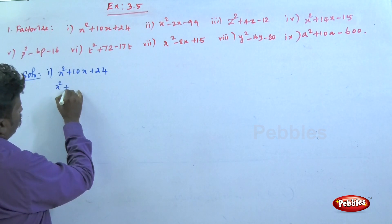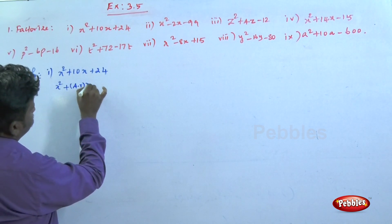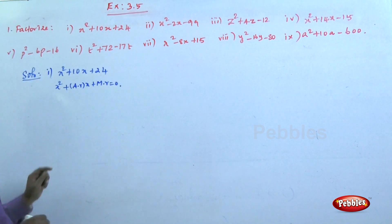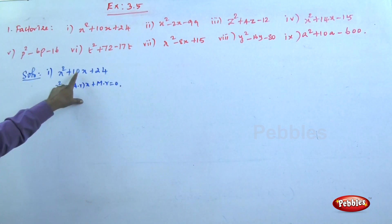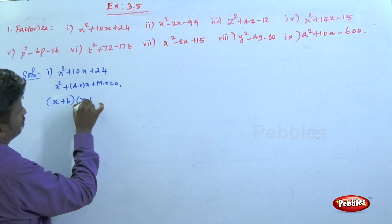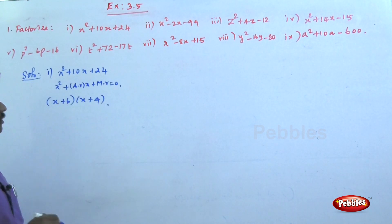The format is x² + (addition of roots) × x + (multiple of roots) = 0. This is the format - the two roots' addition and the two roots' product. The factors are (x + 6)(x + 4).